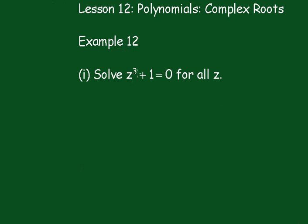We have to solve z cubed plus 1 equals naught for all z. As you can see, this is a polynomial of degree 3, so there will be three solutions, and because all the coefficients are real, those solutions will come in conjugate pairs.